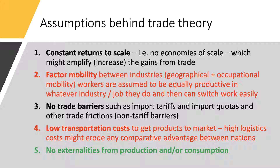The second point — factor mobility — is tremendously important. This model assumes factor mobility between industries, both geographical and occupational. For example, if a worker was previously working in a farm sector, perhaps producing wheat or soya beans, and that worker is then required to shift production over into light manufacturing, we assume those workers are perfectly mobile, both geographically and occupationally between industries, and equally productive in whatever industry or job they do.